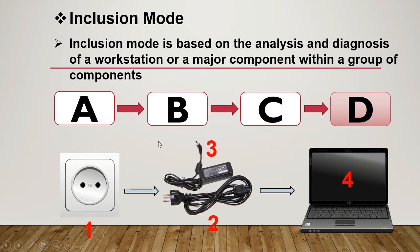For example, as you can see here, we have the chain or the process. We have A, B, C, D - four components. In the inclusion mode, we will focus on the major component. In our example here, D is number four, which means the laptop. If we have the problem here, we should focus on the laptop. This is inclusion mode.